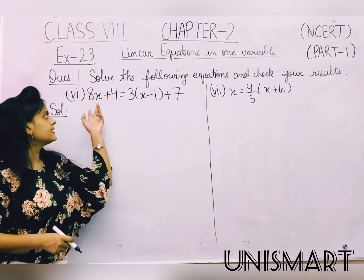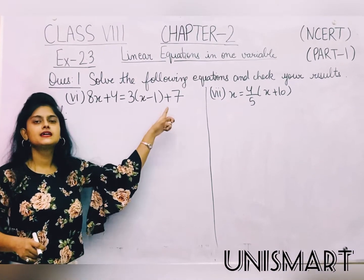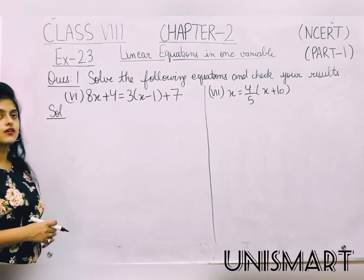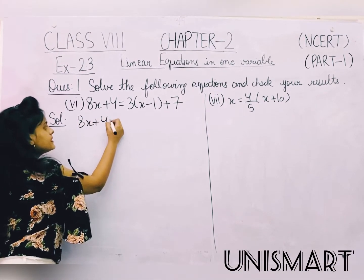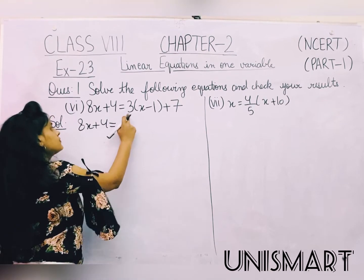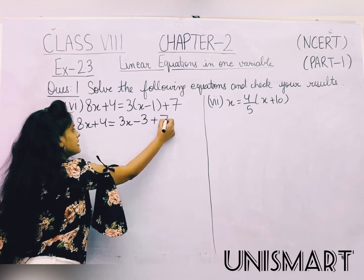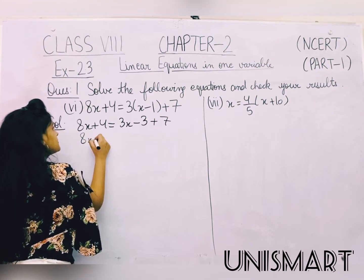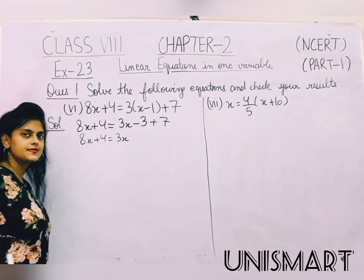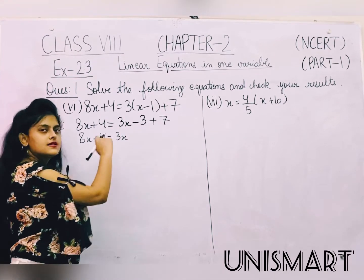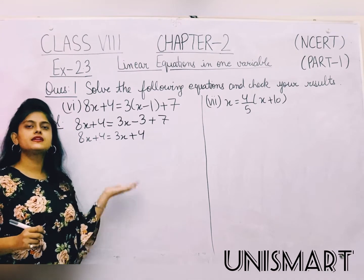The 6th part is 8x plus 4 is equal to 3 multiplied by (x minus 1) plus 7. We expand the bracket: 3 into x is 3x, minus 3 into 1 is 3, plus 7. So 8x plus 4 is equal to 3x minus 3 plus 7, which simplifies to 3x plus 4.